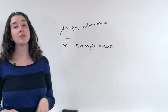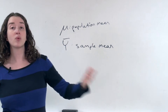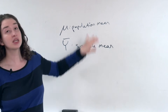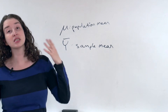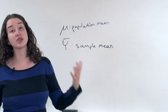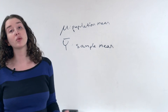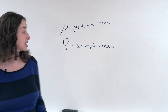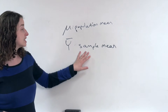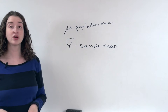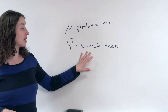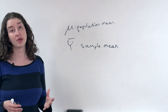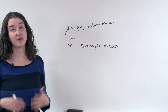So for example, if I'm thinking of all women in the US, the population mean is conceptually the average of the heights of all women in the US if I could actually obtain those heights.